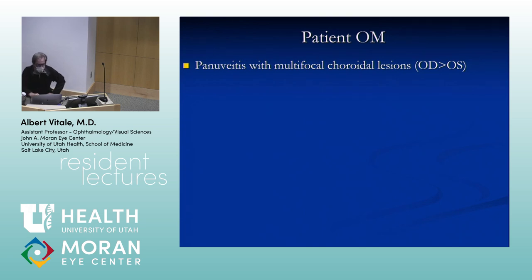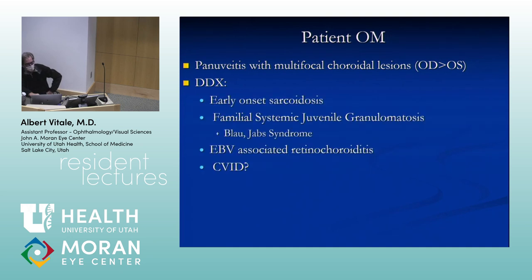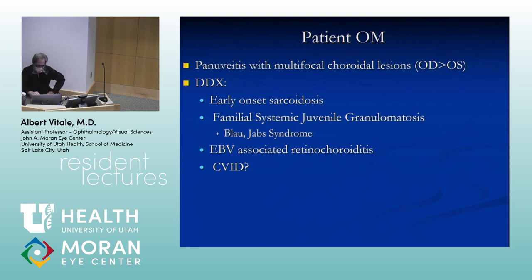We have pan-uveitis with multifocal choroidal lesions in both eyes and a path report showing inflammation. Differential includes: early-onset sarcoid, familial systemic juvenile granulomatosis (Blau/Jabs syndrome), Epstein-Barr virus, and common variable immunodeficiency syndrome, which can look very similar to multifocal choroidal sarcoidosis.